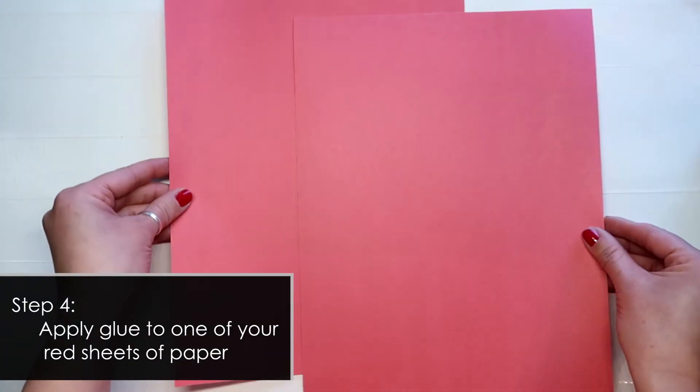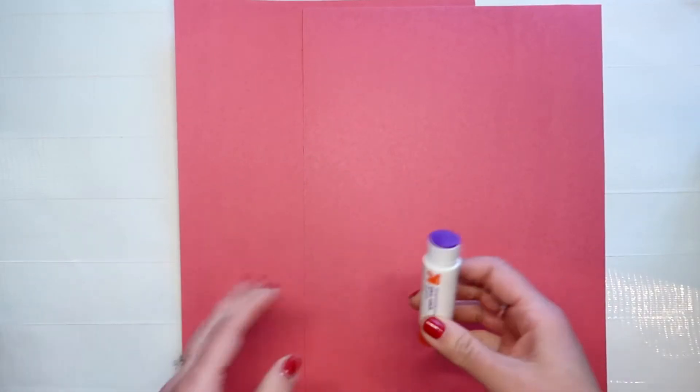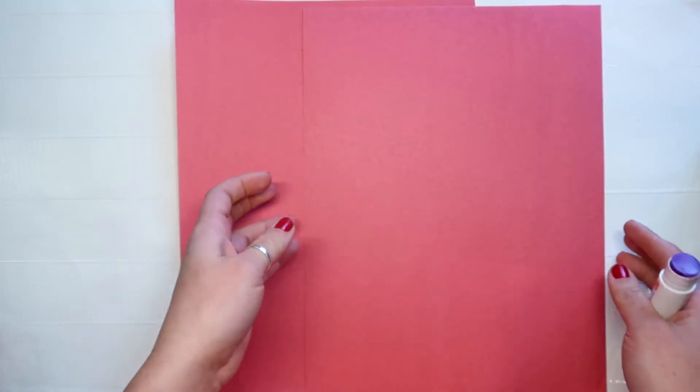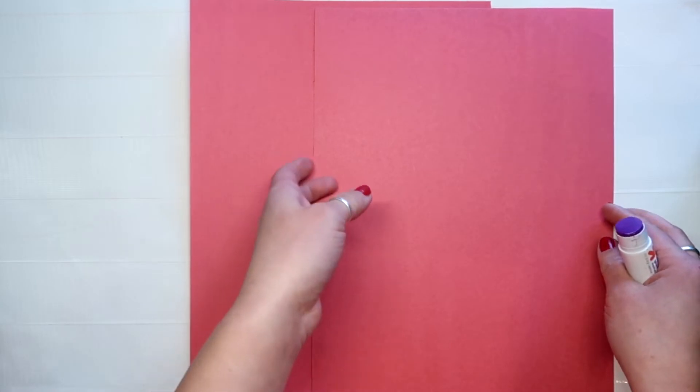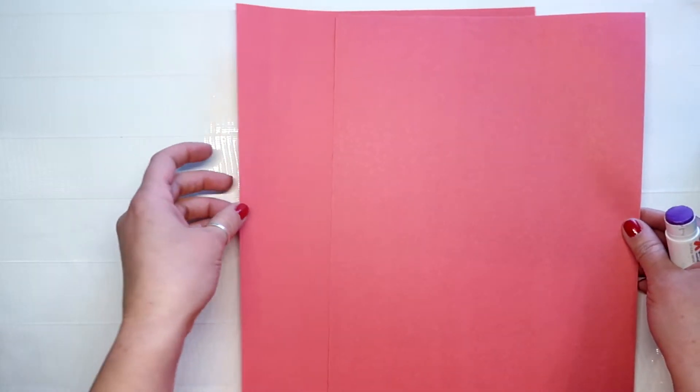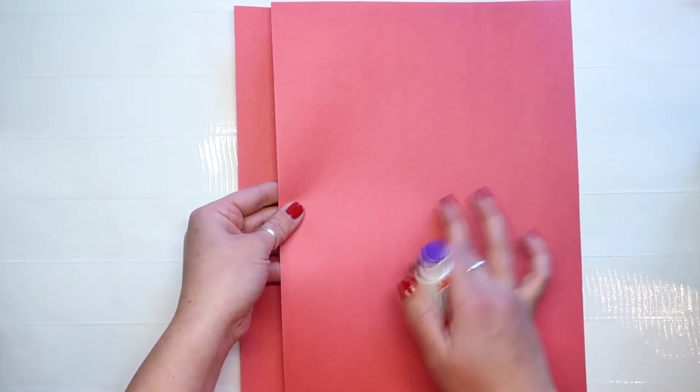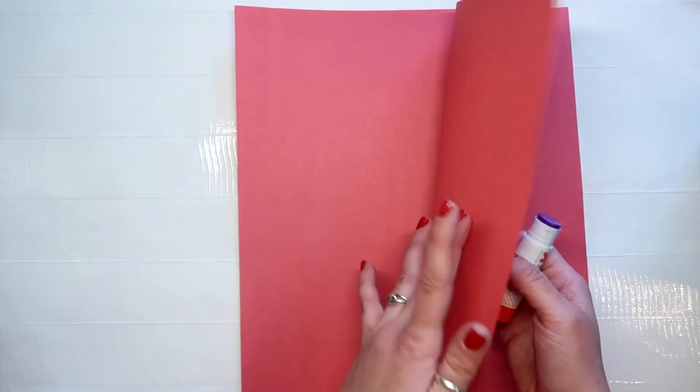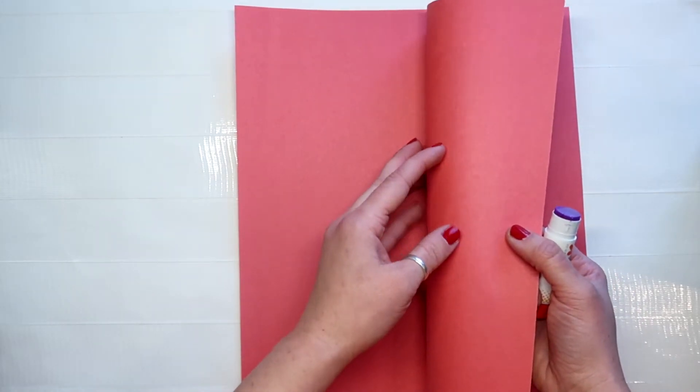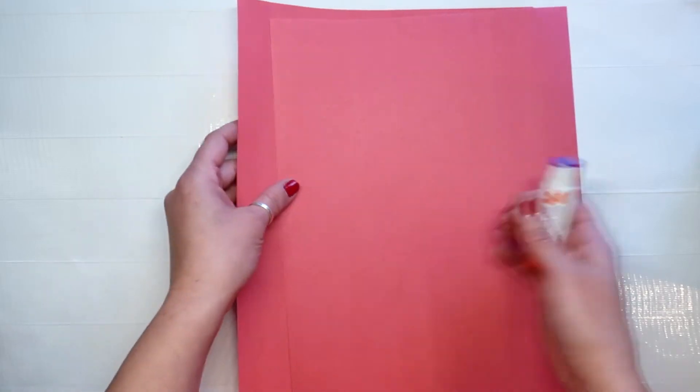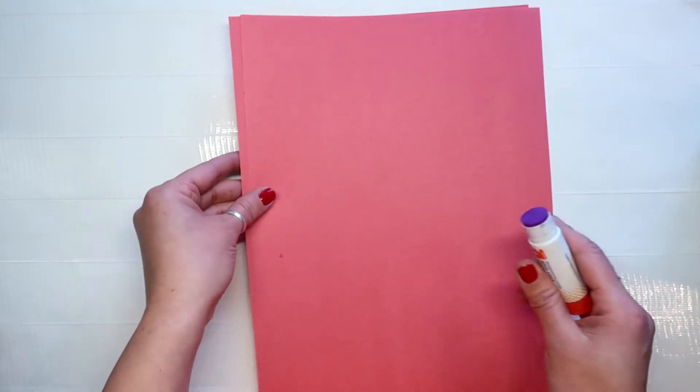So now we're going to take the two sheets that you're using for the back of your card and some of your glue. Now if you're using actual stock paper that's thicker you may not have to do this but we're going to double this up so it's a little thicker and when we're gluing everything on to this one sheet it will go through and you can kind of see it on the back so by having it doubled it won't show the glue as much.